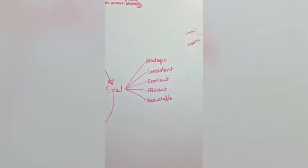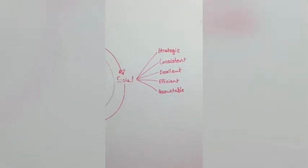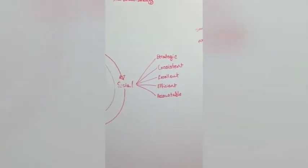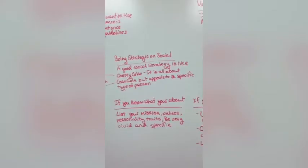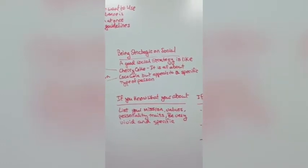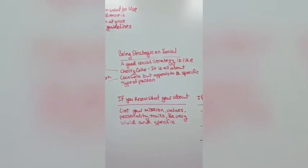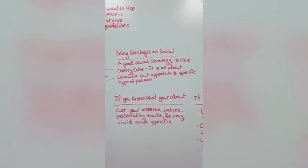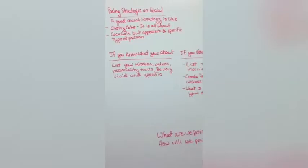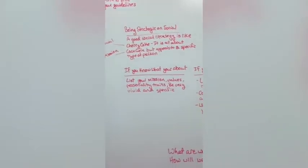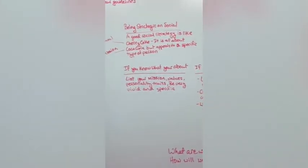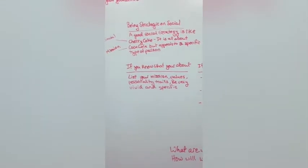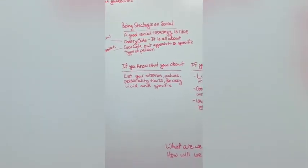When we break that down further, we're looking right now at just the strategic part — being strategic on social. A good social strategy is like a cherry Coke: it's all about Coca-Cola, but it appeals to a specific type of person. That's what being strategic on social looks like. Coke is the base, cherry is social, and everything points to the base.